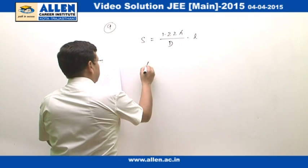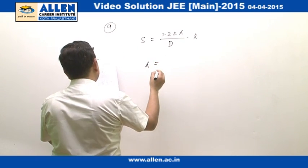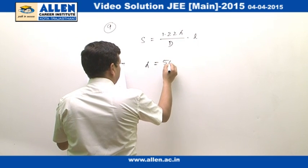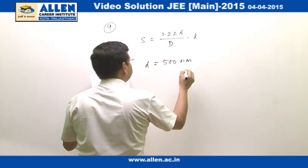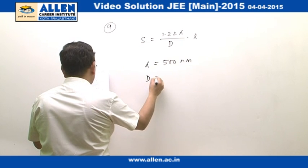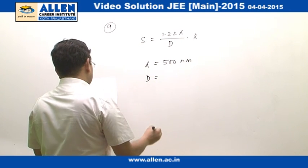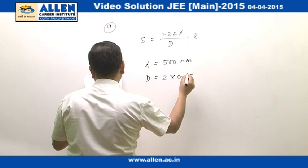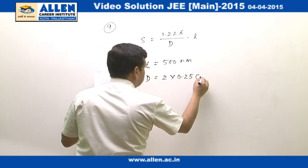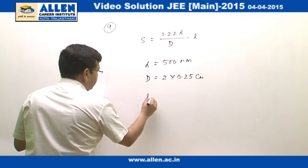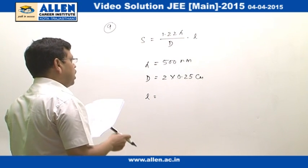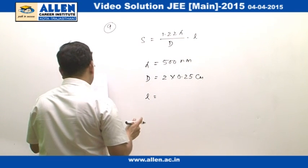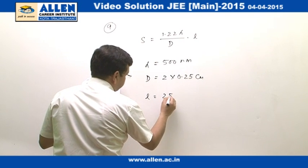In the present case, lambda is given out to be 500 nanometre, D is given out to be 2 into 0.25 cm and the distance where the objects are located from the eye is given out to be 25 cm.